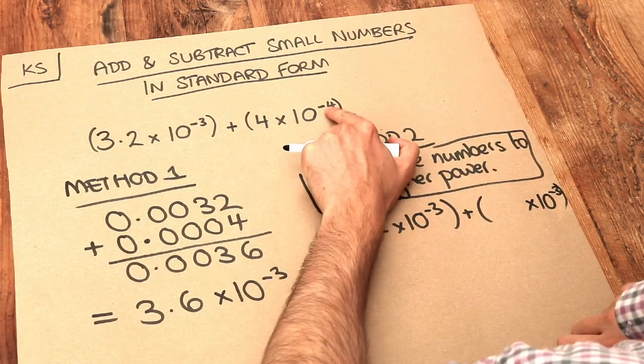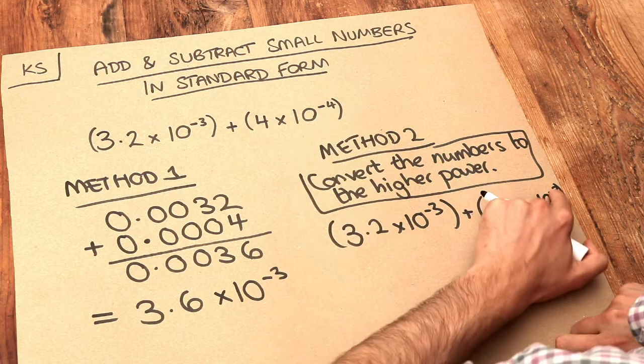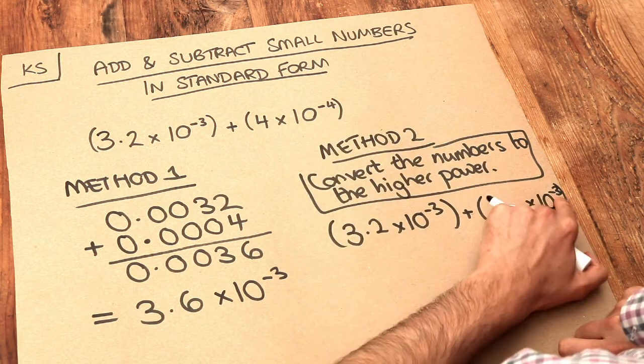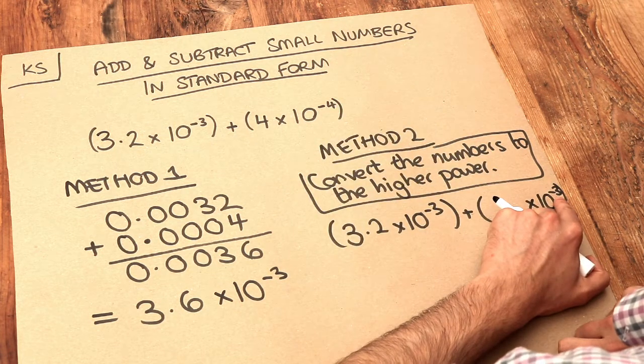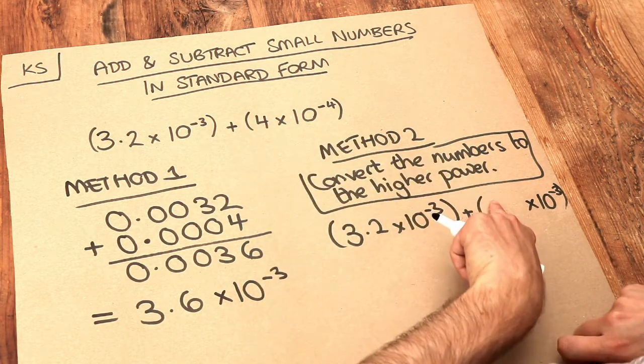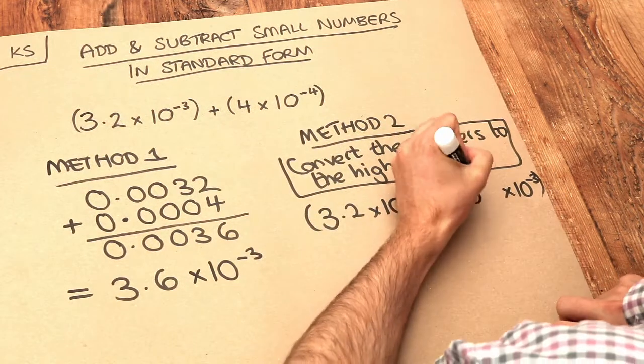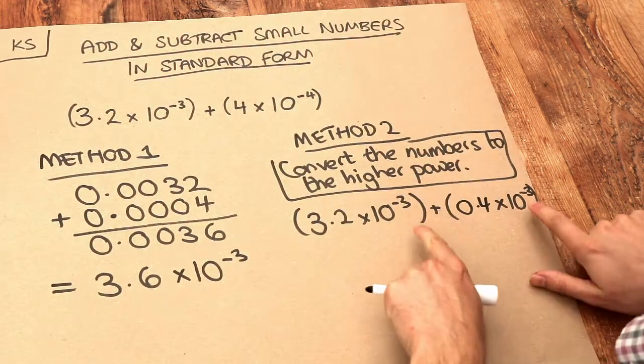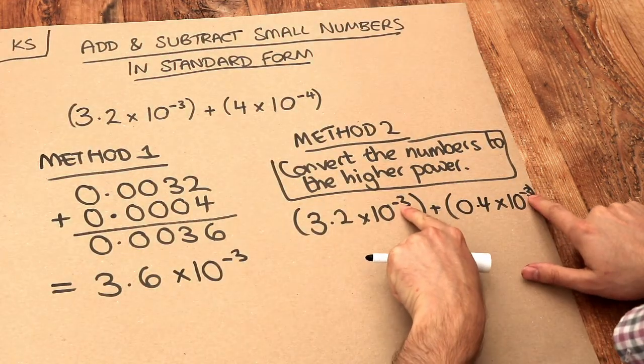Now, this index is increased by one from minus four to minus three. That means it's 10 times bigger if the index has gone up by one. Therefore, to compensate, I have to make that four 10 times smaller. So four becomes 0.4. And because now we have consistent indices here, we can easily add these numbers together.